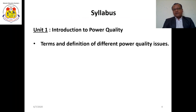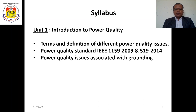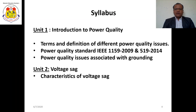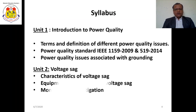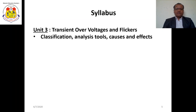In brief, the syllabus of Power Quality contains: first unit — introduction to power quality, terms and definitions of different power quality issues, standards associated with power quality, and grounding and power quality issues. The next unit covers voltage sag, characteristics of voltage sag, equipment behavior under voltage sag, monitoring and mitigation.